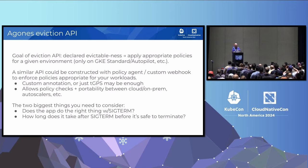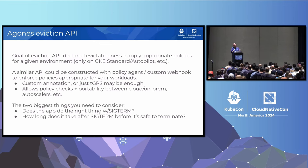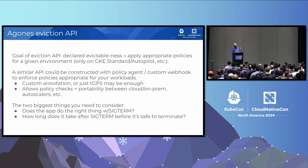This approach makes your workloads portable in case you want to test both Cluster Autoscaler and Karpenter, or you're migrating between different clouds. The two biggest things to consider if you want to implement something like what Agones does: does the app do the right thing with SIGTERM? And how long after SIGTERM before it's safe to terminate — which is the termination grace period seconds conversation.